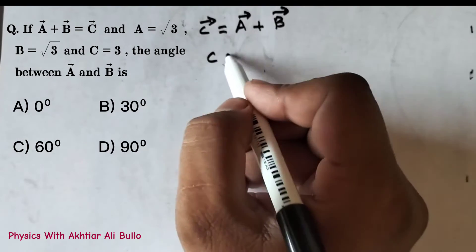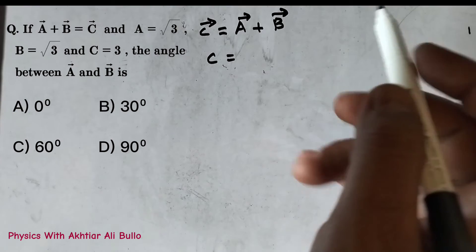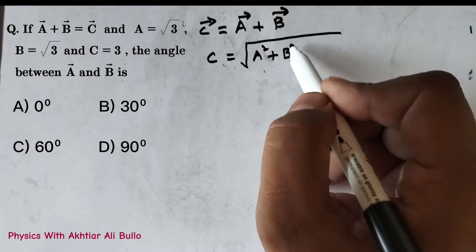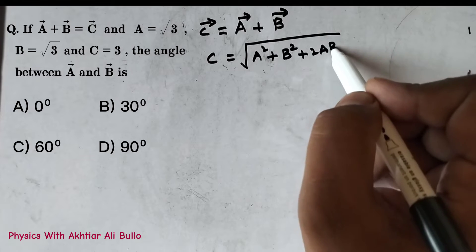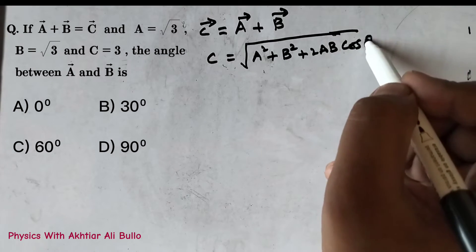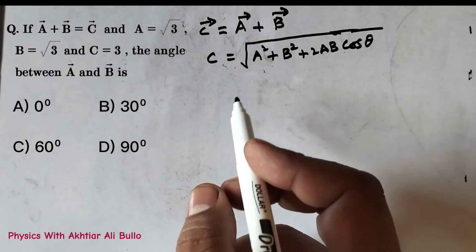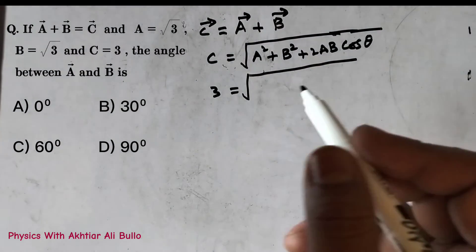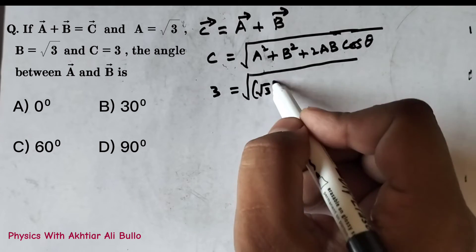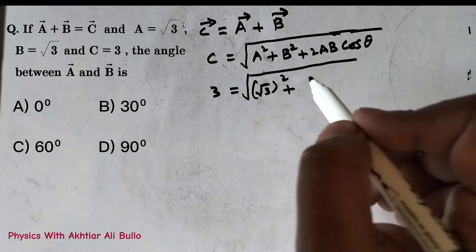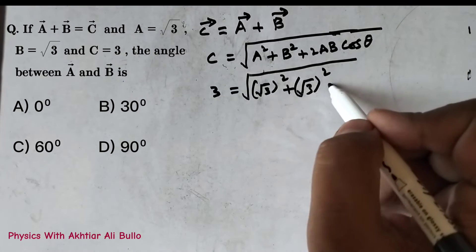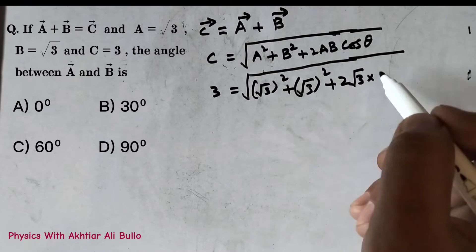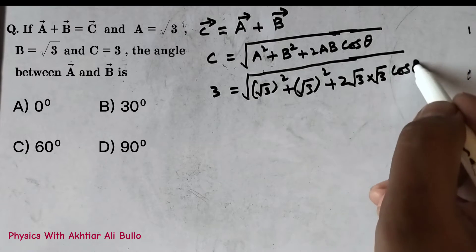The magnitude of c is equal to the magnitude of a vector plus b vector, which equals √(a² + b² + 2ab·cosθ). Since the value of c is 3, we write: 3 = √(under root 3 whole square + under root 3 whole square + 2 × √3 × √3 × cosθ).